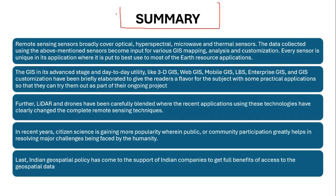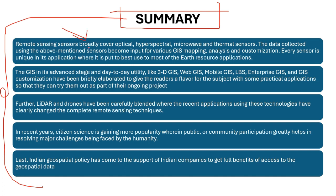We have now finished the lecture on recent trends in Geoinformatics. In summary: remote sensing sensors are broadly categorized into optical, hyperspectral, microwave, and thermal sensors used for various GIS mapping and analysis. GIS has advanced from day-to-day utility to 3D GIS, web GIS, mobile GIS, LBS, enterprise GIS, and GIS customization. LiDAR and drones are integrated with recent applications, and citizen science is gaining popularity through public and community participation. The Indian geospatial policy now supports Indian companies in accessing geospatial data fully. Thank you very much.